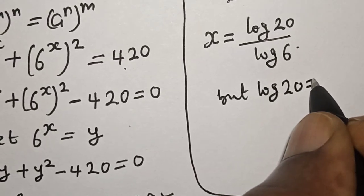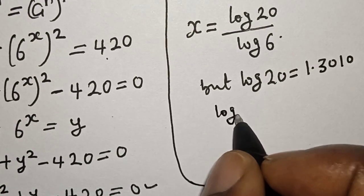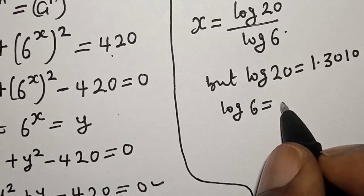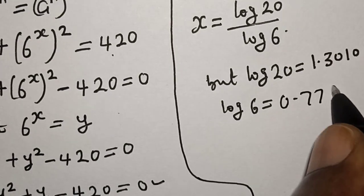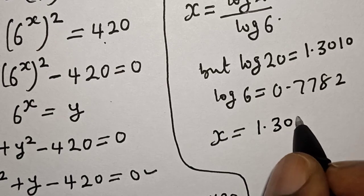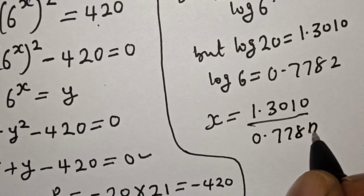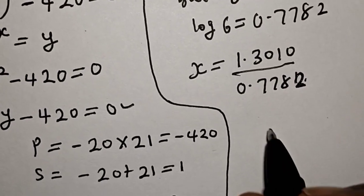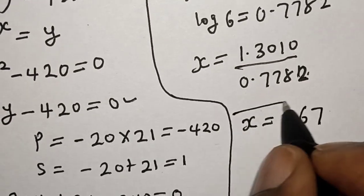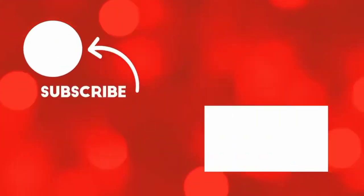Now, log 20 is equal to 1.3010 and log 6 is equal to 0.7782. Substituting, s equals 1.3010 divided by 0.7782, which gives s equals 1.67. That is our final answer. If you enjoyed the class, please don't forget to like, share, comment, and subscribe. Thank you.